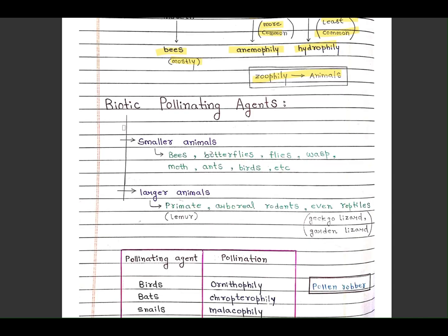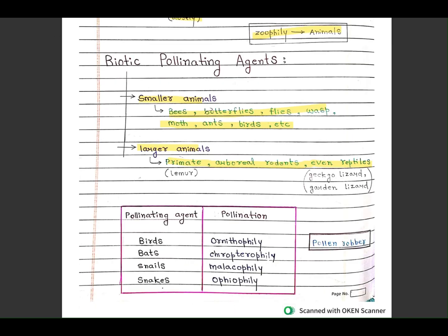Biotic pollinating agents: smaller animals such as bees, butterflies, flies, wasps, moths, ants, birds, etc. And larger animals: primates, arboreal rodents, even reptiles. These are the pollinating agents and the pollination done by them.